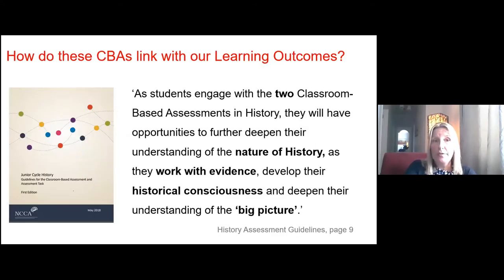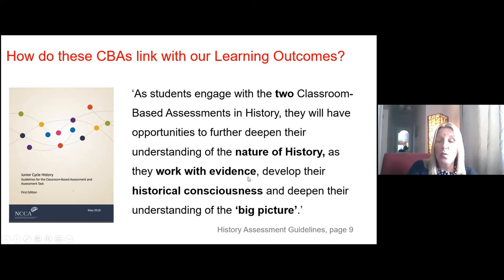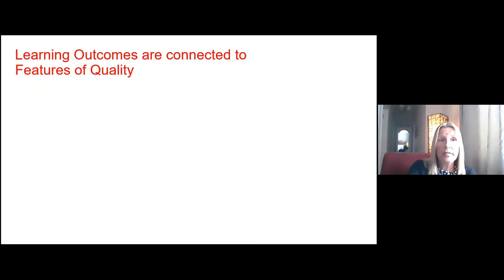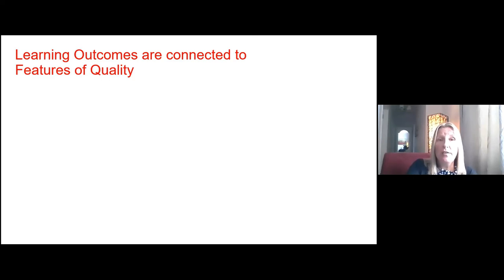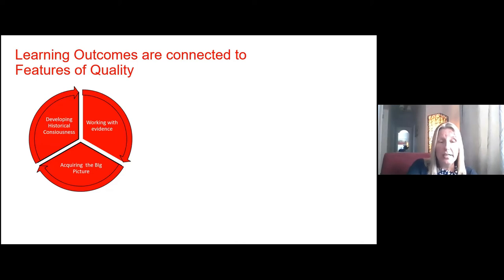How do these CBAs link with our learning outcomes? As students engage with the two classroom-based assessments in history, they will have opportunities to further deepen their understanding of the nature of history — they'll work with evidence, develop their historical consciousness, and deepen their understanding of the big picture. Therefore, the learning outcomes are connected to the features of quality. They are linked very closely with the learning happening in the classroom and give students a sense of what quality achievement looks like in a particular task.